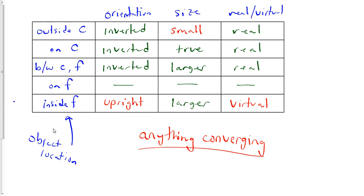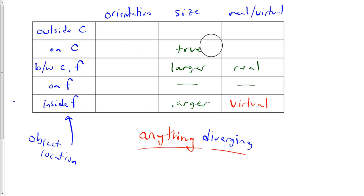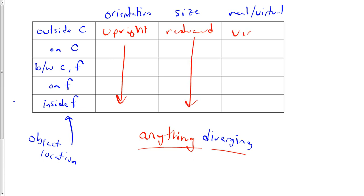So if you were to make this chart and do it for anything diverging, it's pretty easy to fill in. The orientation is upright for all of them. Size is reduced for all of them. And it's virtual for all of them.